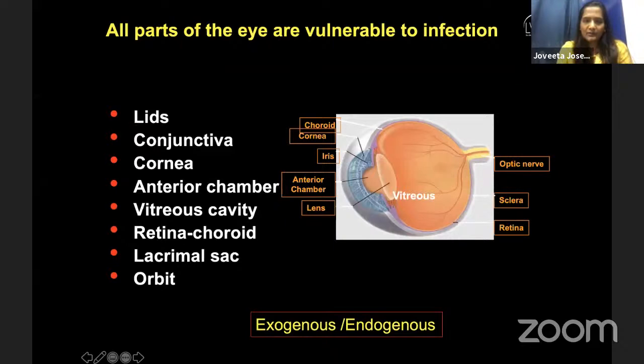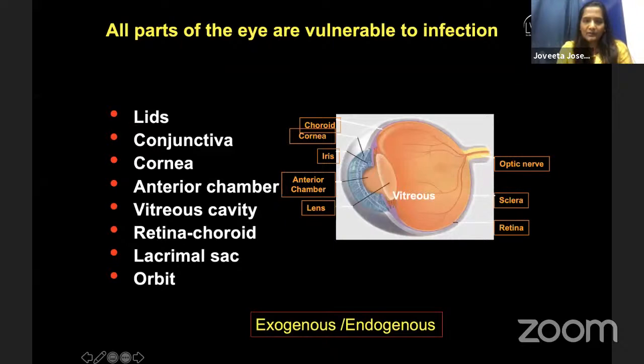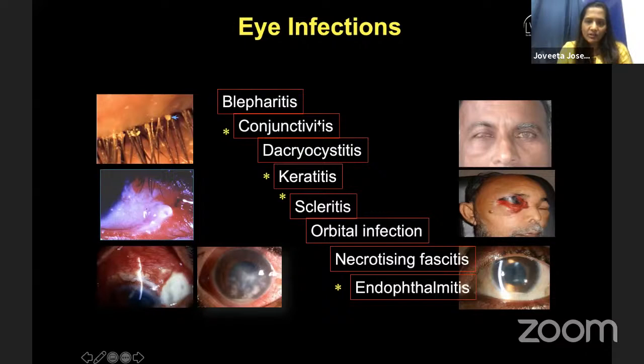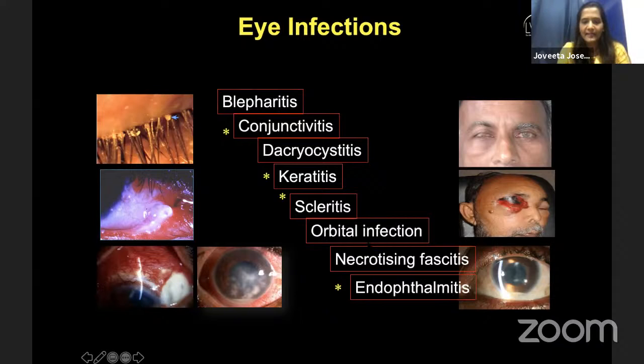All parts of the eye are vulnerable to infection — whether it is the choroid, cornea, iris, anterior chamber, lens, sclera, or retina, each can be susceptible to infection. Accordingly, inflammation of these parts is termed blepharitis if it is inflammation of the eyelids, conjunctivitis if it is the conjunctiva, dacrocystitis, keratitis, scleritis, or endophthalmitis. The highlighted ones with star marks are those we predominantly see, but we do also have cases of blepharitis and orbital infections.